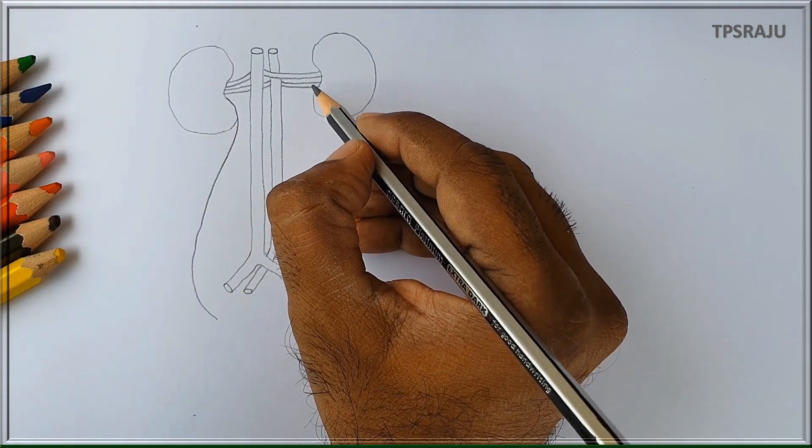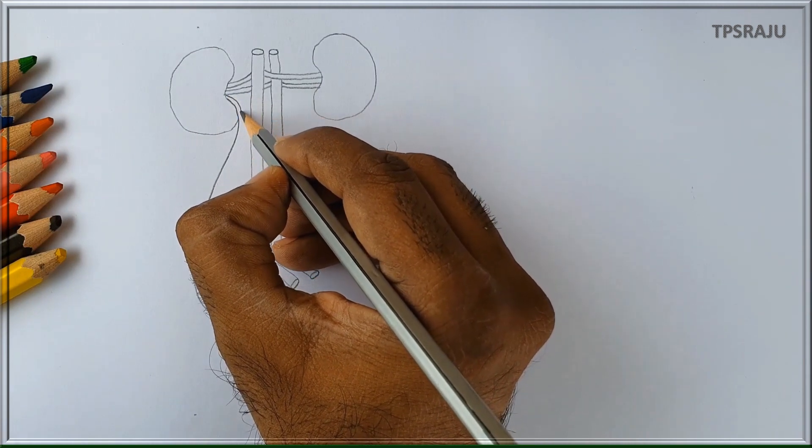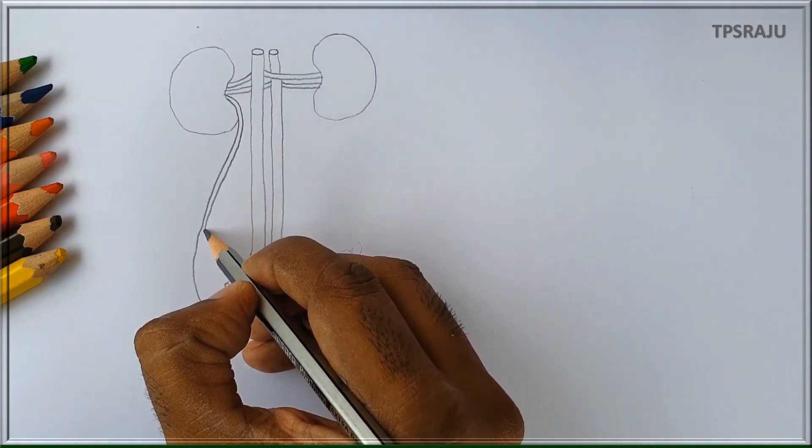There are two ureters, one from each kidney. These are narrow and distensible tubes.